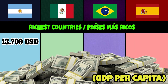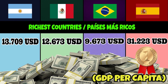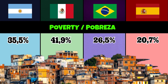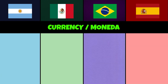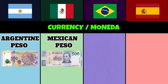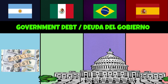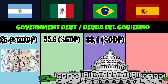GDP per capita: 13,709 dollars, 12,673 dollars, 9,673 dollars, 31,223 dollars. Poverty rate: 35.5%, 41.9%, 26.5%, 20.7%. Currency: Argentine peso, Mexican peso, Brazilian real, Euro. Government debt as percent of GDP: 76.3%, 55.6%, 88.4%, 110.5%.